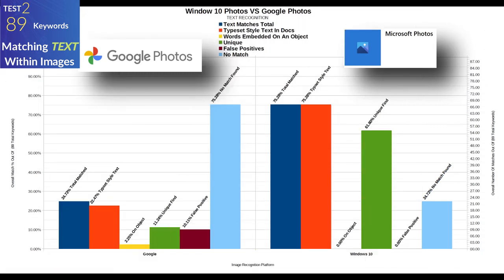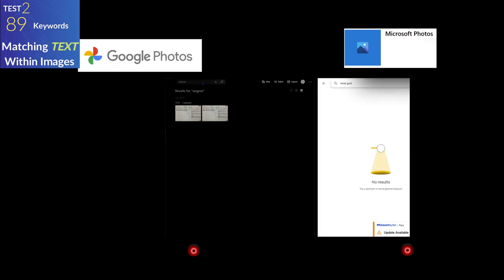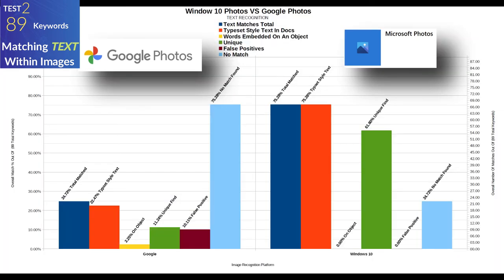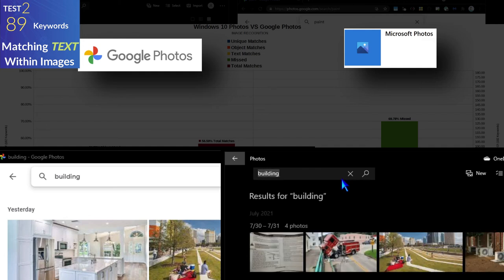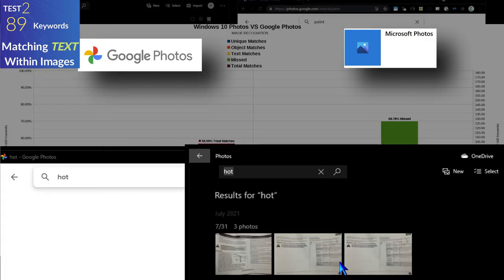Keep in mind we're not comparing who found all instances or all possible associations for every keyword, because some of that is subjective — for example, what counts as 'fur' or 'bedding' is debatable. These results simply measure whether any result was returned during those 89 searches that contained the actual text or could be realistically associated with the keyword. Any such result counted as a successful search.